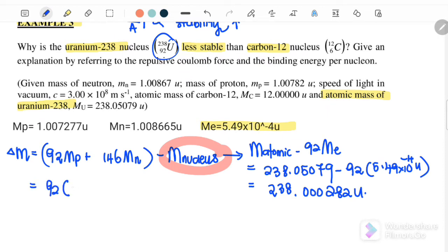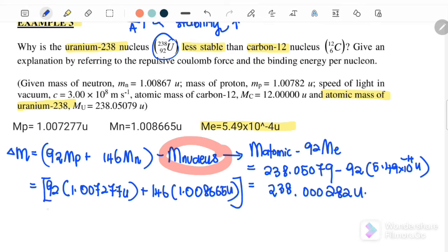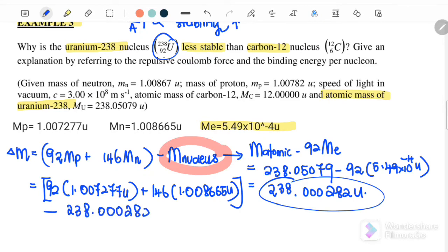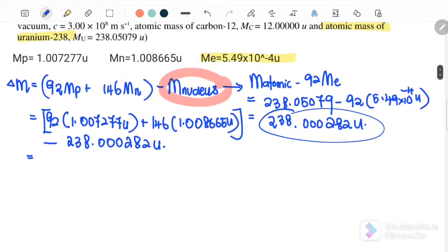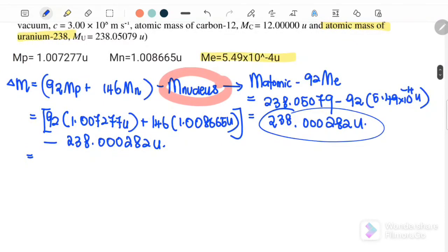Substituting: 92 times 1.007277u plus 146 times 1.008665u minus mass of the nucleus 238.000282u. Therefore, the mass defect for uranium equals 1.934292u.